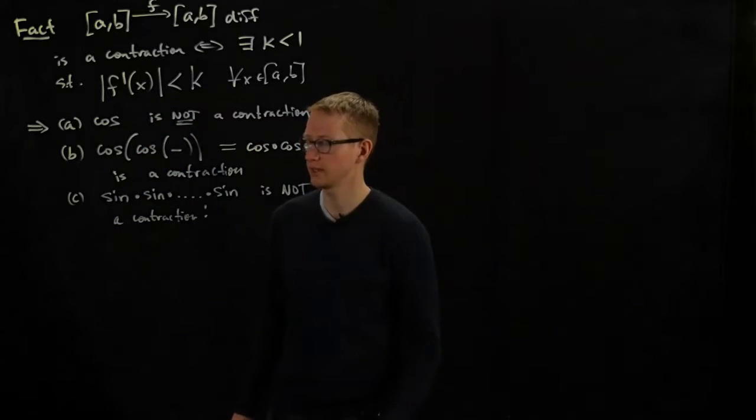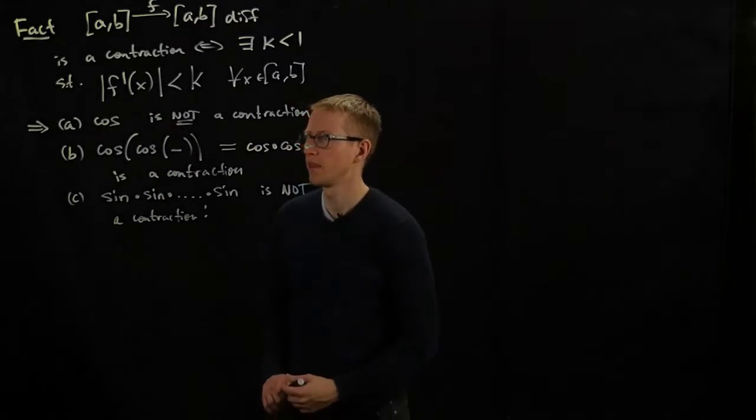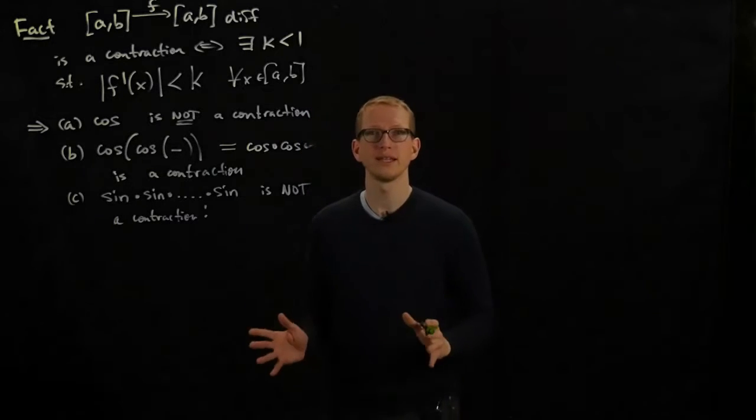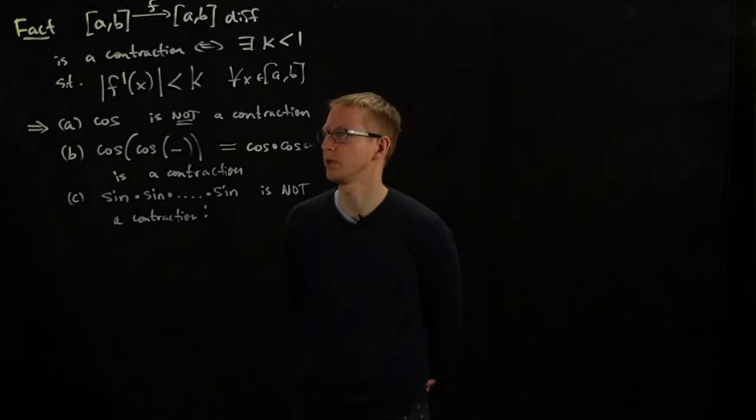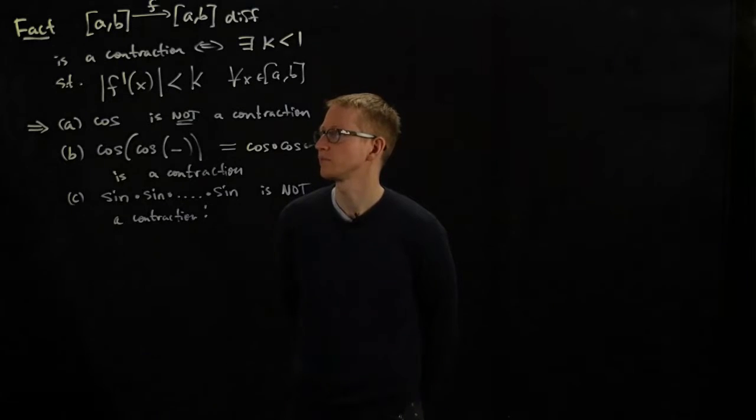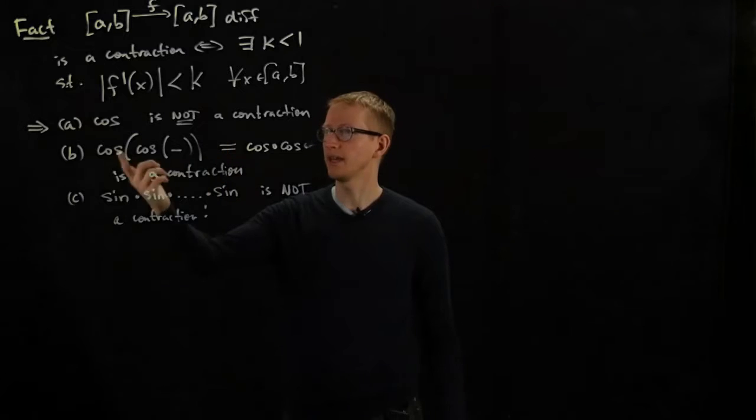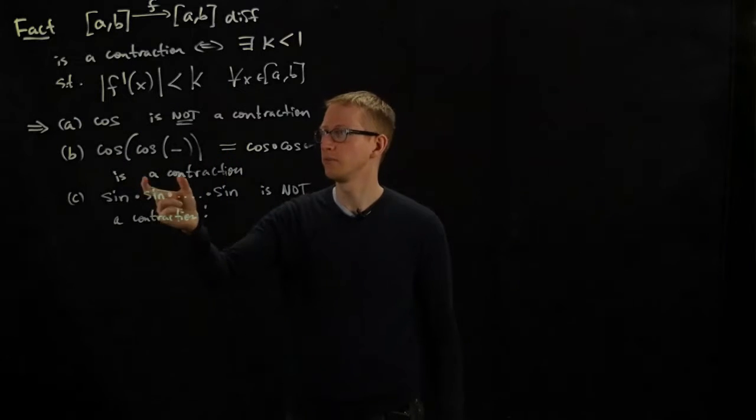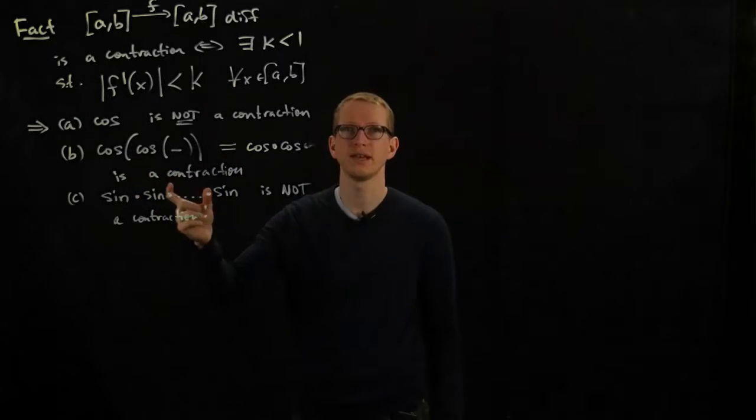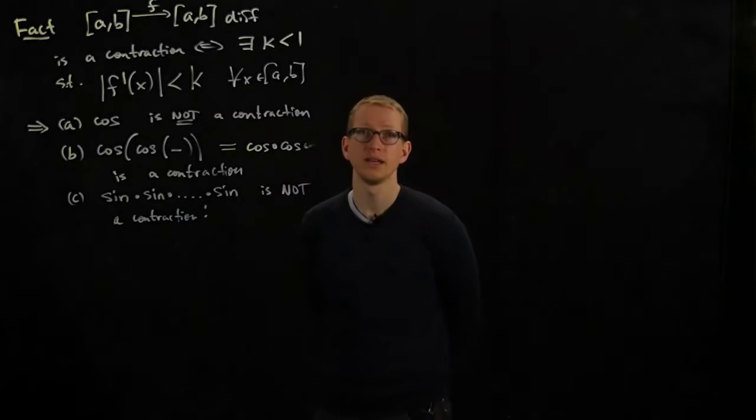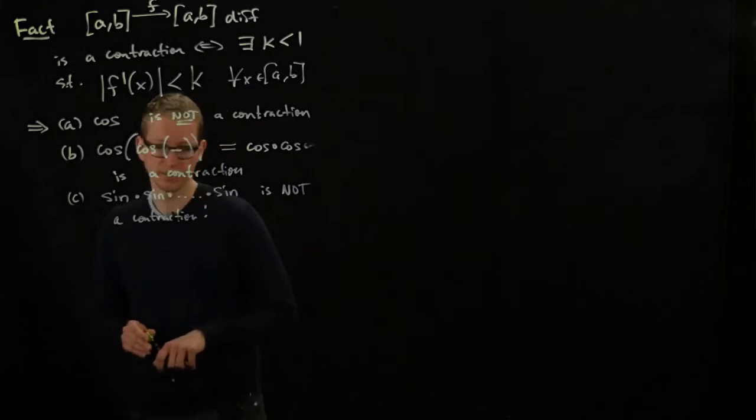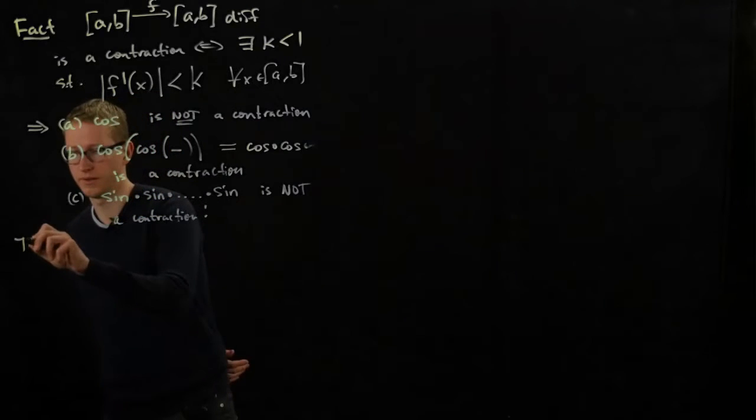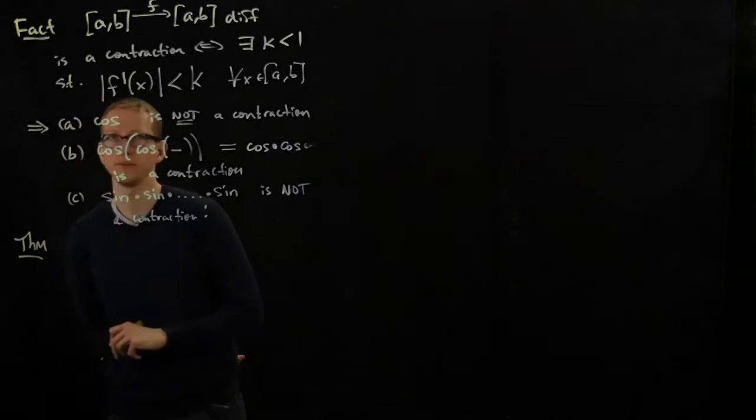So why are these facts important? Well, we showed that cosine has a fixed point, at least intuitively. I didn't actually prove that those sequences were Cauchy, but it's true. And yet, we found a fixed point. But if you notice, B tells us that cosine applied to itself is a contraction. And this leads us to a great theorem, with even more applications.